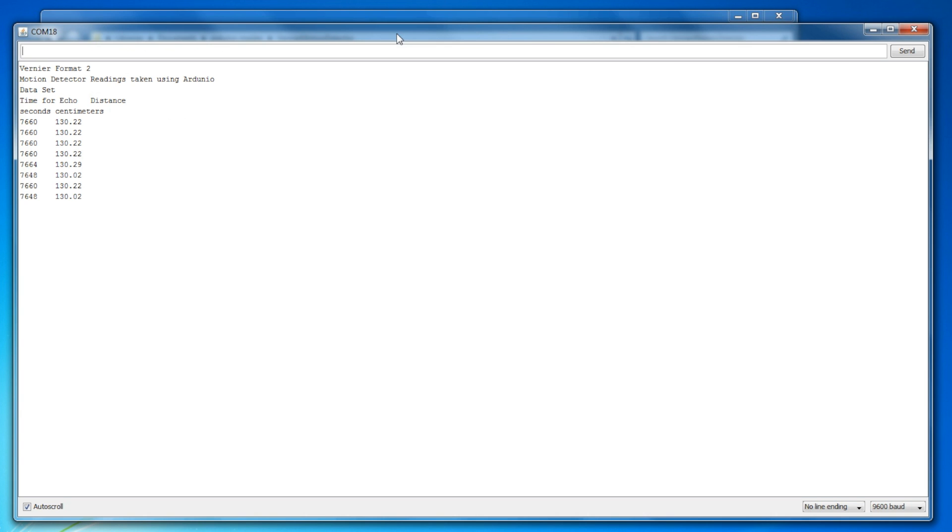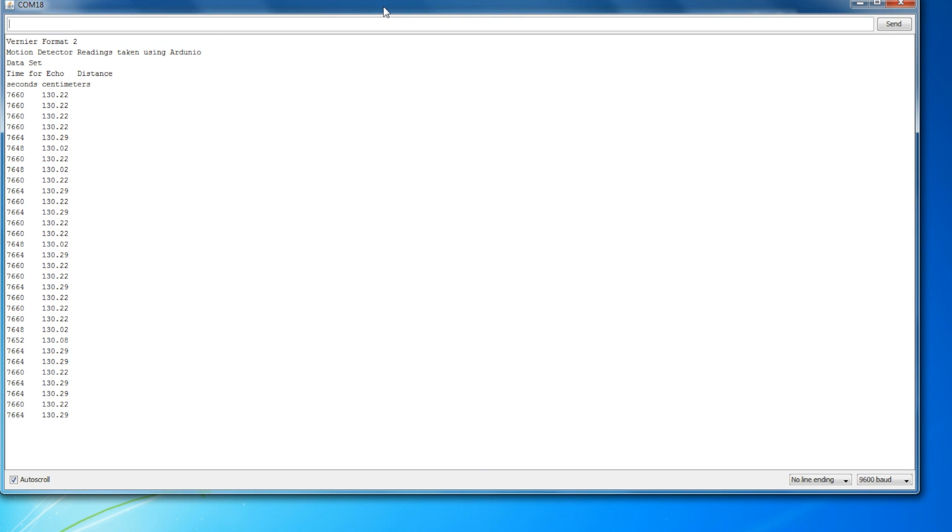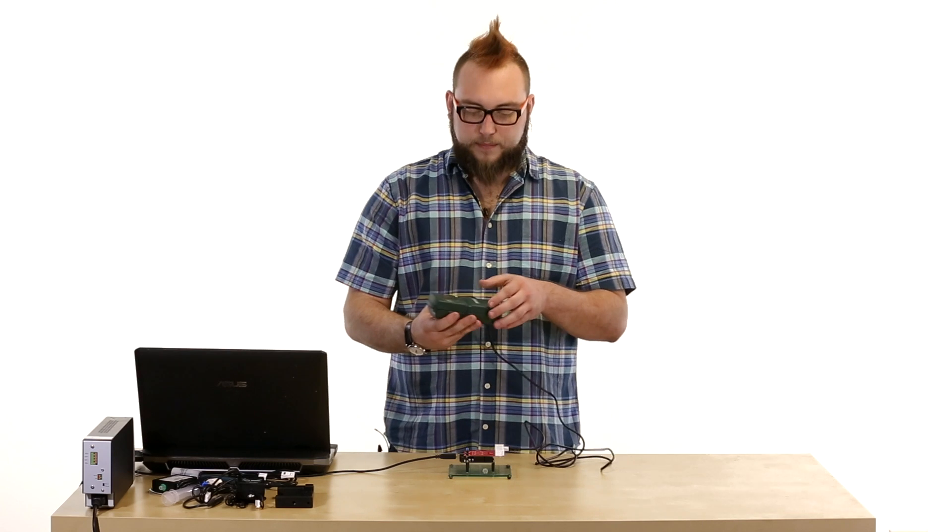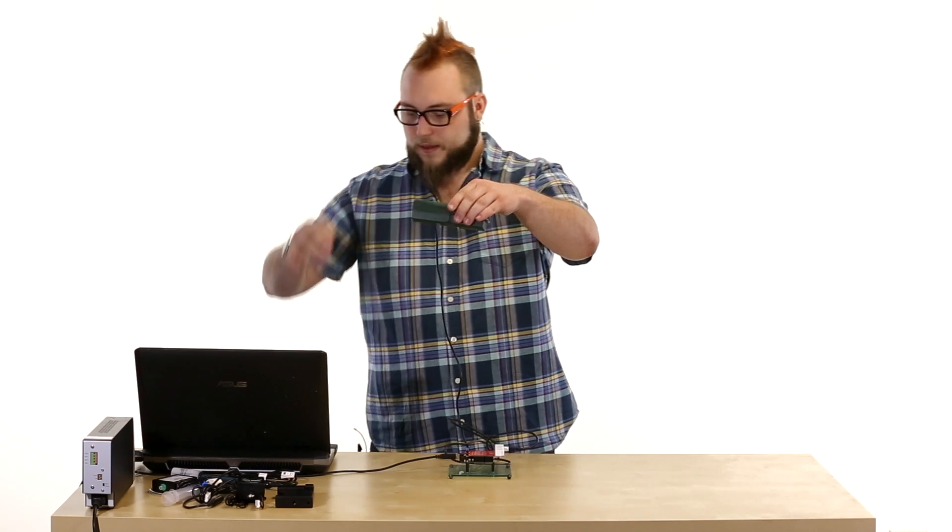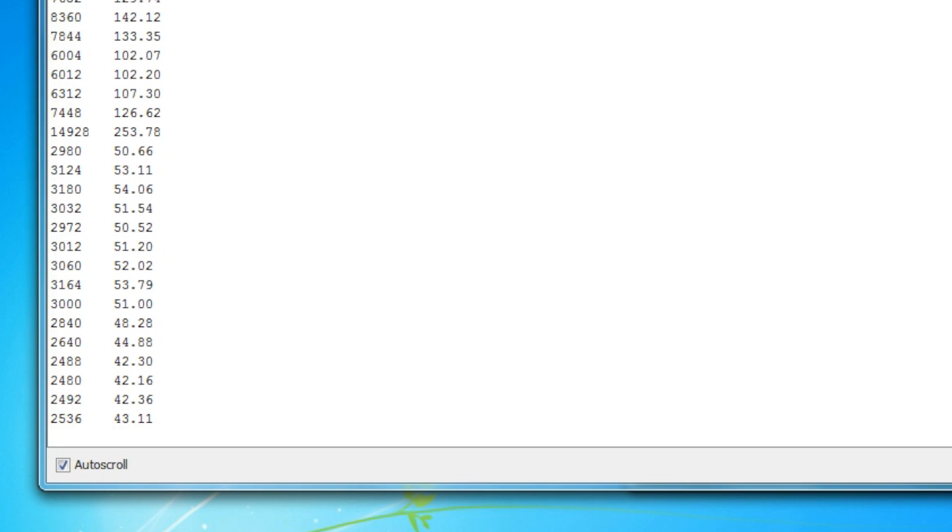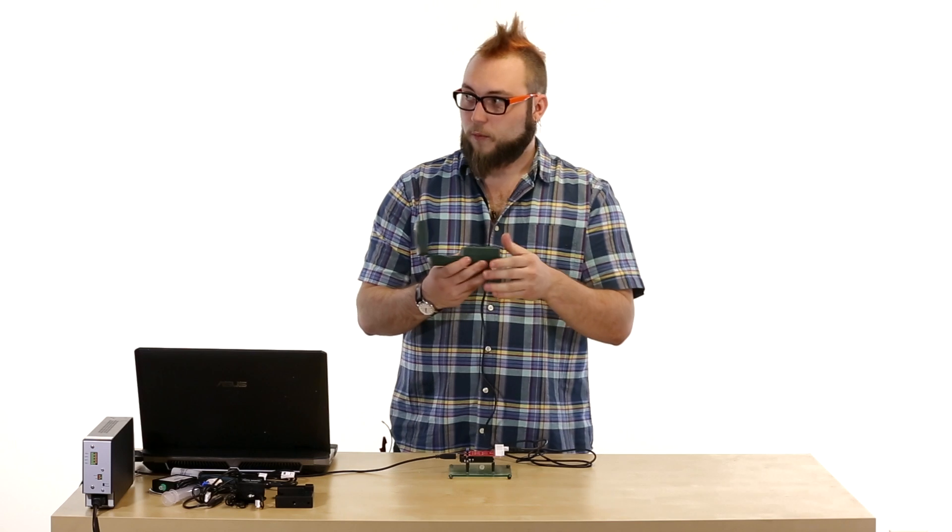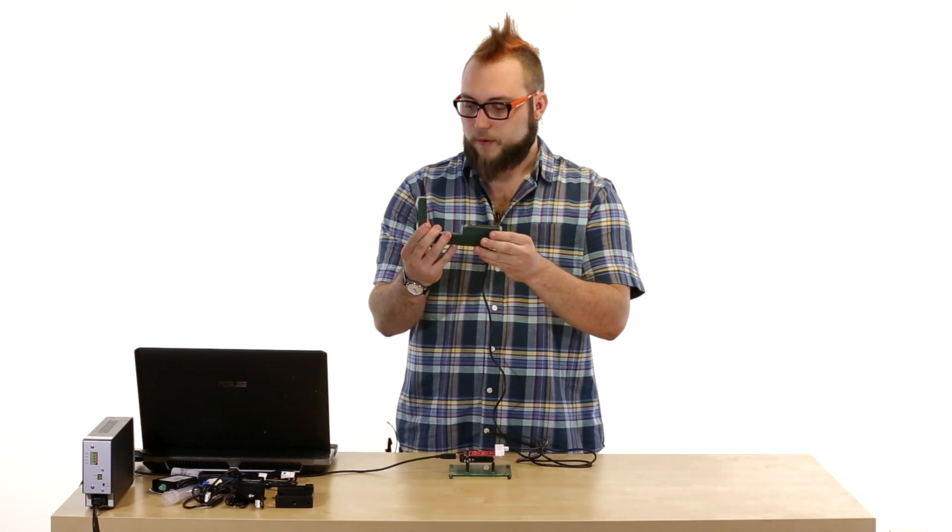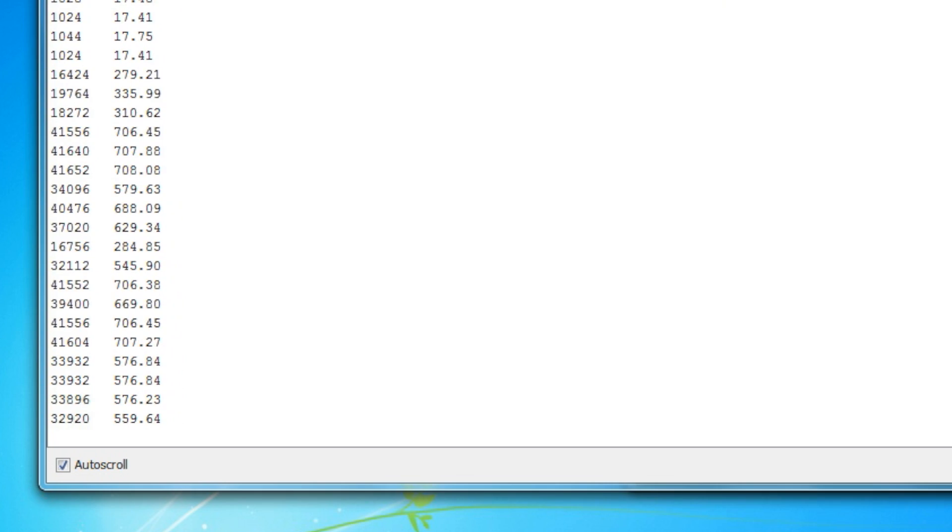This sketch will spit out distance in centimeters at a regular interval that you can adjust in the code. So, we'll open the serial monitor, and you may be able to hear the motion detector actually clicking. It uses an audible sort of echolocation to determine the distance. So if I pick up the motion detector and aim it down at the table, you can see that the numbers are changing on the screen. As I lower it down towards the table, the numbers get smaller. Pick it up from the table, the numbers get bigger. And if I flip this over and aim it at the wall across the room here, you'll notice the numbers get much larger. And in theory, that should be real centimeters from here to the wall.